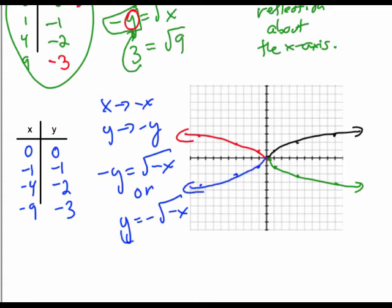And so that graph can be considered as a reflection about two axes consecutively. Or another way to look at it is a rotation of the original graph 180 degrees about the origin.